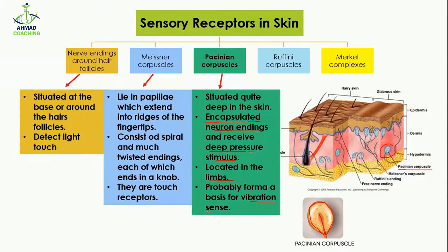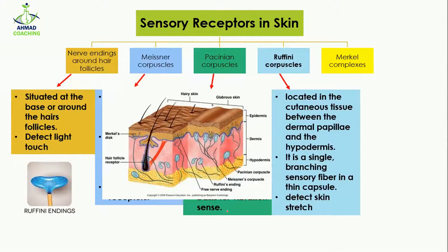Pacinian corpuscles also form the basis for vibration senses — if any vibration is happening in the earth, these receptors detect it. For example, vertebrates crawling on the surface of the earth can detect vibrations caused by earthquakes or other changes through these Pacinian corpuscles.